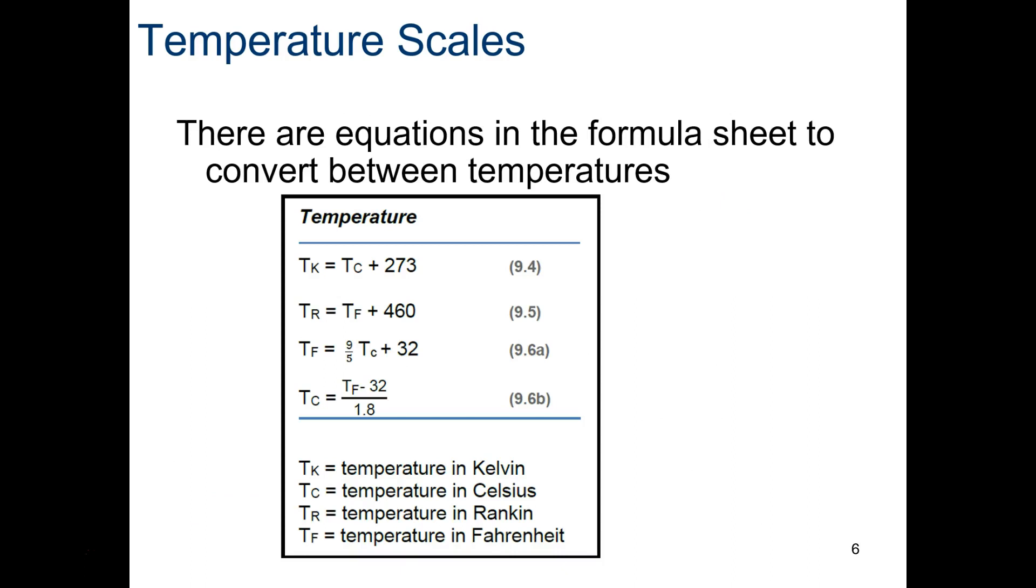These are some conversion factors you want to write down. To get temperature Kelvin from Celsius, you just add 273. Temperature Rankin, if you think about it, Celsius and Fahrenheit are the two main scales. Kelvin is the absolute scale for the metric system. Rankin is the absolute scale for Fahrenheit. To get temperature in Rankin, you take the Fahrenheit and add 460 to it. To get Fahrenheit from Celsius, you multiply by 9 fifths and add 32. To get Celsius from Fahrenheit, you subtract 32 and then divide by 1.8.